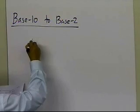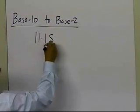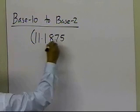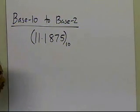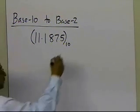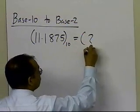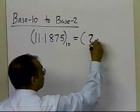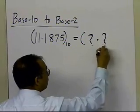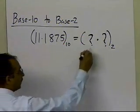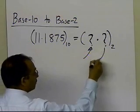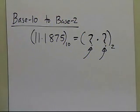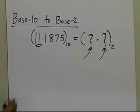For example, I'm going to take the number 11.1875, which is in base 10. How do I convert this number into base 2? What is the base 2 equivalent? There's a question mark before the radix point and another question mark after it. Let's start with the integer part, which is the part before the decimal point — or what we call the radix point for any base.